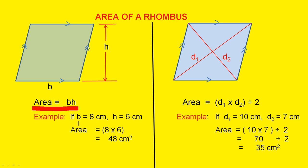Here's an example. If b equals 8 centimeters and h equals 6 centimeters, the area is 8 times 6, which is 48 square centimeters.